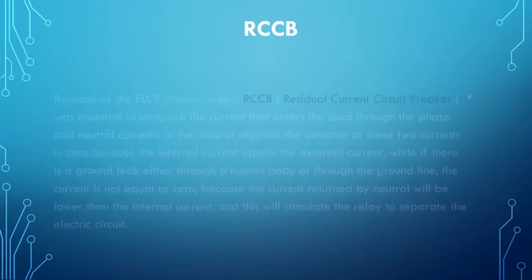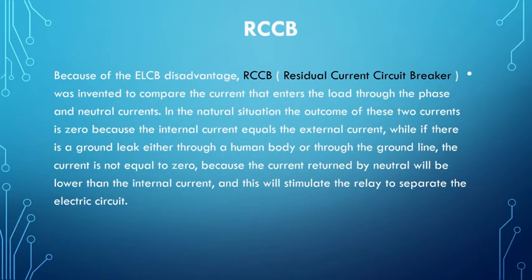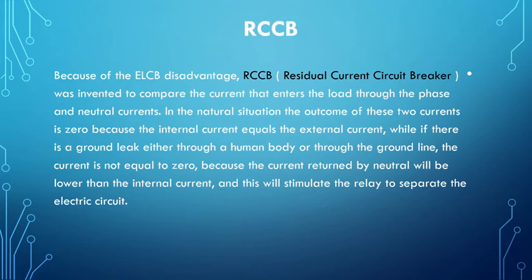RCCB. Because of the ELCB disadvantage, RCCB — residual current circuit breaker — was invented to compare the current that enters the load through the phase and neutral currents. In the natural situation, the outcome of these two currents is zero because the input current equals the output current. However, if there is a ground leak either through a human body or through the ground line, the current is not equal to zero, because the current returned by neutral will be lower than the input current, and this will stimulate the relay to separate the electric circuit.